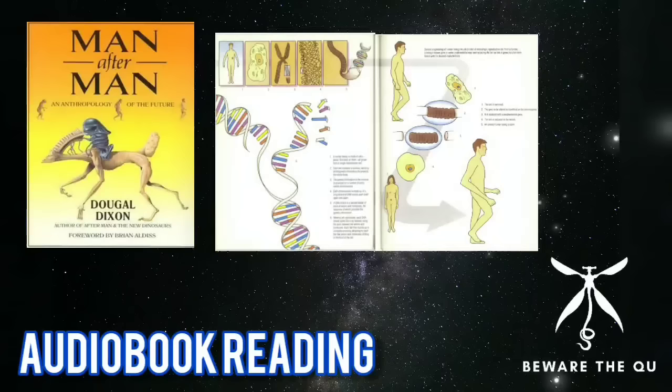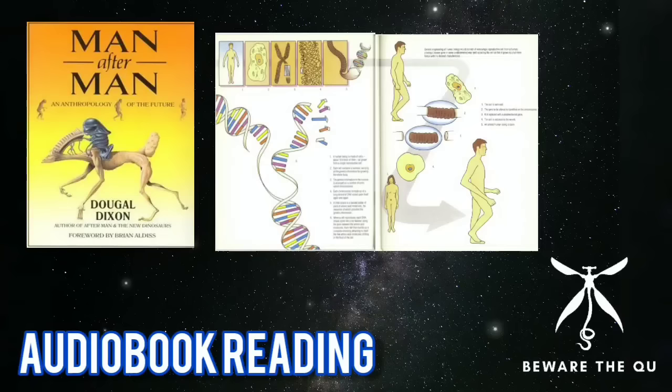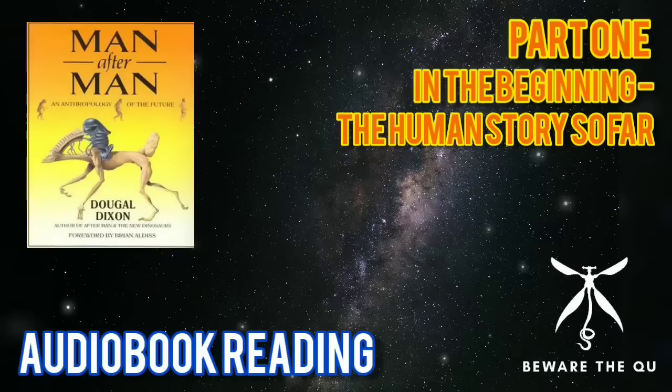Before any of this can be attempted, the whole gene pattern has to be mapped. At the moment, only about 100 human genes have been identified and interpreted. But since genetics has only been in existence for a century, and the structure of the chromosome has only been known for about four decades, scientific advance in this area is increasing exponentially — what was speculation about genetic engineering is quickly becoming fact.